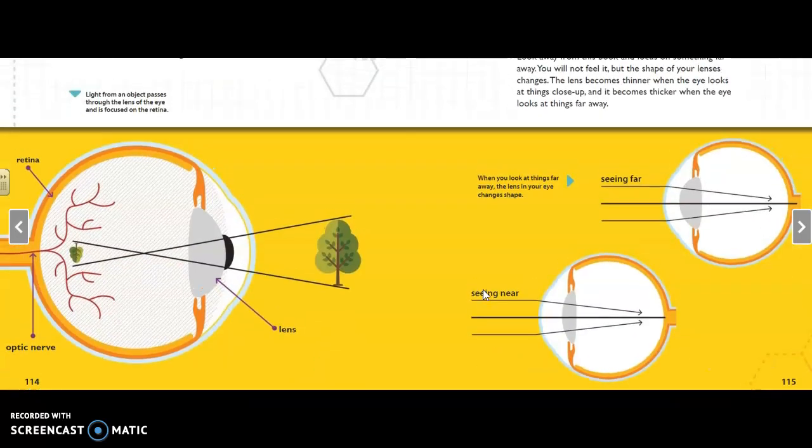So, how does this diagram help you understand that better? It shows that the shape of the lens changes so that the object you're looking for is in focus.